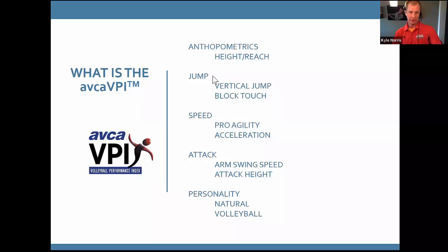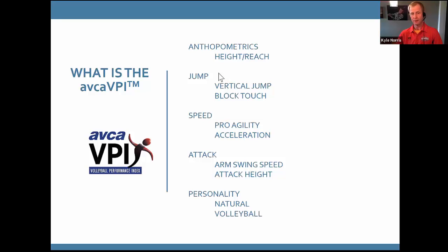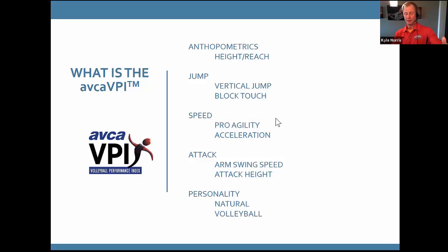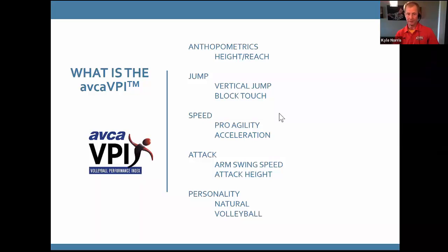The VPI is made up of four categories: anthropometrics (height and reach), jump (vertical and block touch), speed, and personality. The development of these components came out of extensive conversations about what matters and what doesn't. We looked at what other sports are doing, how we can relate tests specifically to volleyball, and which tests are standardized versus those that come from clubs or high schools that we may not trust entirely.